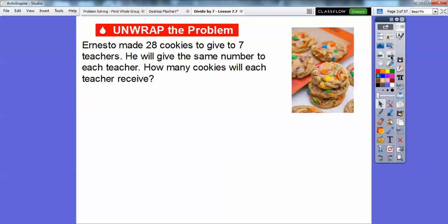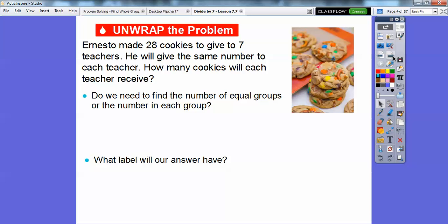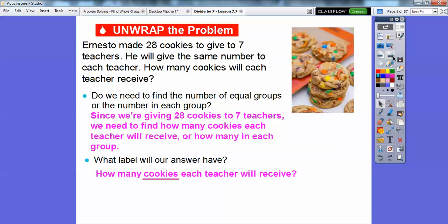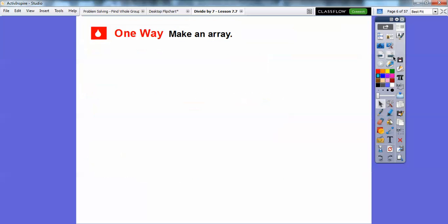Well the title is Divide by Seven, so obviously we're going to do 28 divided by seven, but we'll talk more about that in just a second. So do we need to find the number of equal groups or the number in each group? Well, since we're giving 28 cookies to seven teachers, we need to find out how many cookies each teacher will receive, or how many will be in each group. What label will our answer have? Well, this is talking about cookies, so our answer is going to be in terms of cookies.